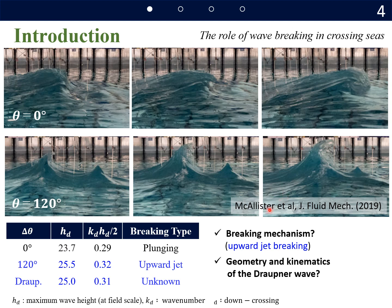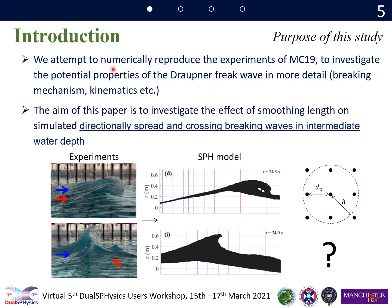But further details of the Draupner wave such as breaking mechanisms, geometry, and kinematics of the Draupner wave are still unknown. So in this study, we attempt to numerically reproduce the experiment of MC19 to investigate the potential property of the Draupner wave in more detail.